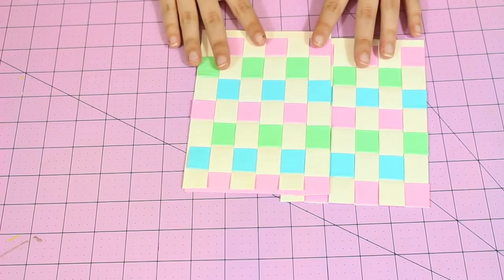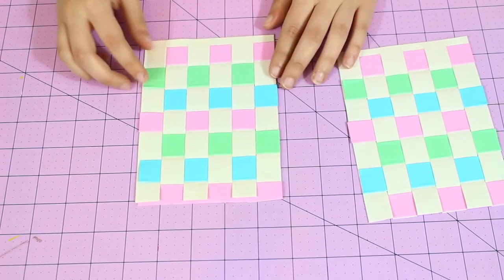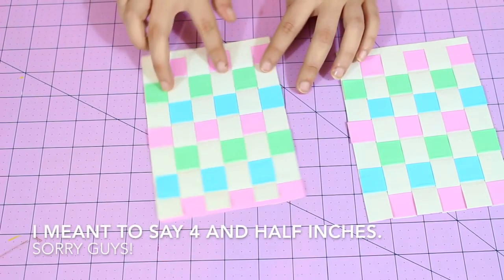Once you finish the bottom of your Easter basket, you're going to want to make four more panels. These two are for the sides, and these are 5 and 1/2 inches tall and 6 and 1/4 inches long.